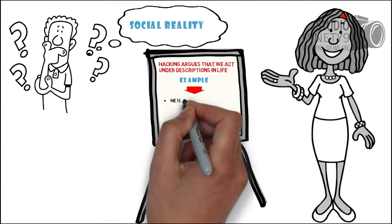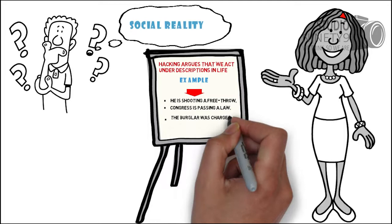For example, when we say phrases such as he is shooting a free throw, or Congress is passing a law, or the burglar was charged with breaking and entering, we know what these descriptions mean.